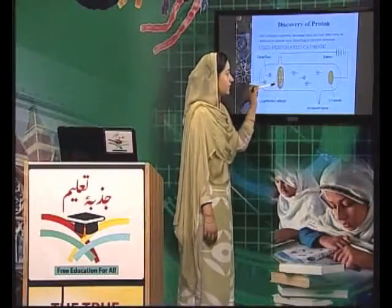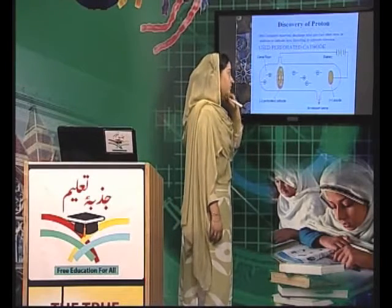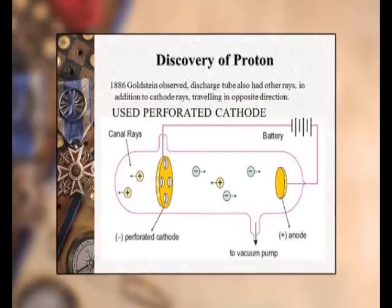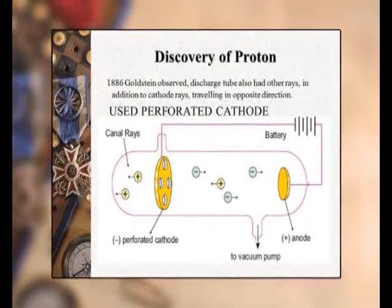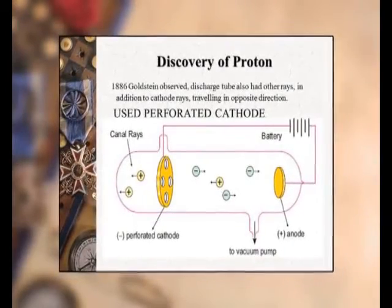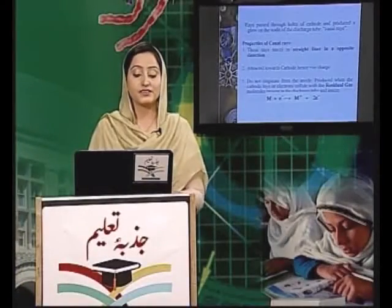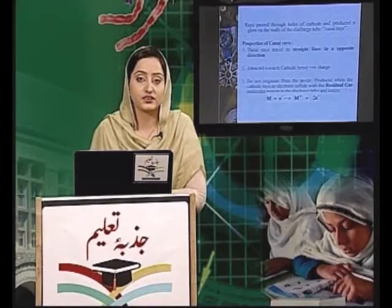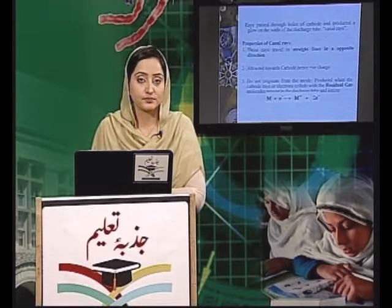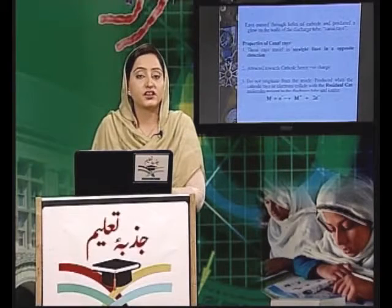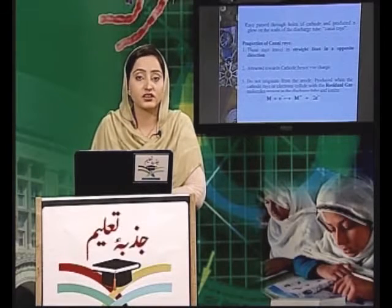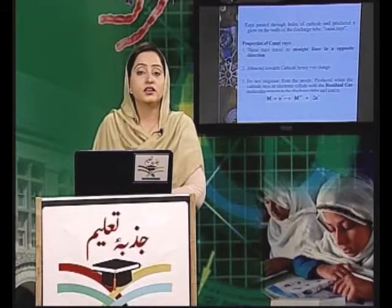जब again high voltage का current pass हुआ तो gas अपने sub-atomic particles में टूट गई। देखा गया कि cathode से निकलने वाली rays तो anode पर चली गئيں, لیکن यह भी देखा गया कि anode से भी कुछ particles cathode की तरफ move किए। ये जो rays थीं इनको canal rays का नाम दिया गया। Canal rays straight line में travel करती हैं, opposite direction में cathode rays से। जब इनको electric और magnetic field में भेजा گیا تो ये negative plate کی طرف turn ہوئیں، جس سے پتا چلا کہ ان کی nature positive ہے۔